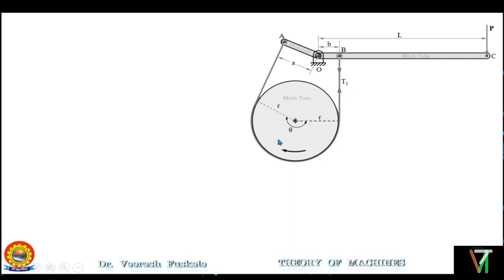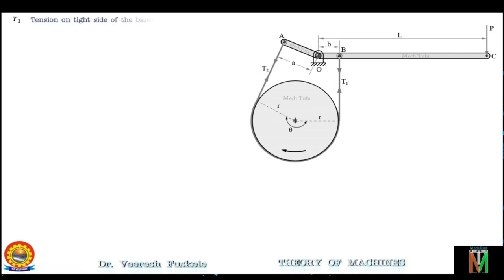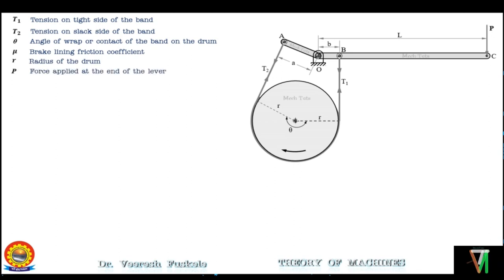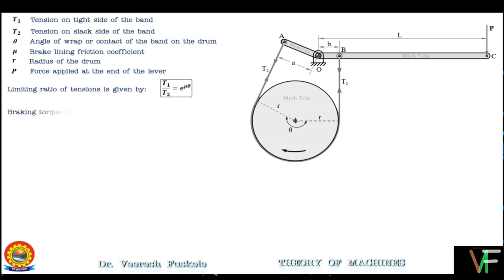As the drum rotates in the clockwise direction, one side will be the tight side and the other will be the slack side. The tight side has tension T1 and the slack side has tension T2. The limiting ratio of tension is given by T1/T2 = e^(μθ), and the braking torque on the drum is given by Tb = (T1 − T2) × R. These two equations will be used for solving numerical problems.